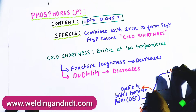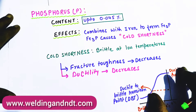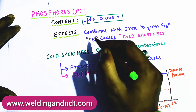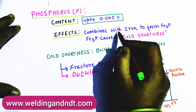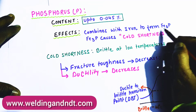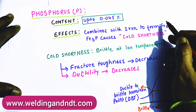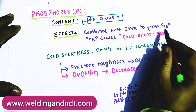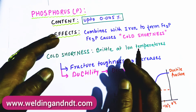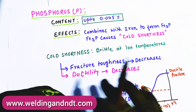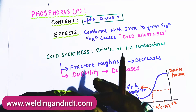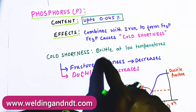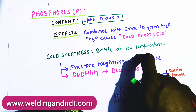After manganese we will read about phosphorus. Phosphorus is present up to 0.04–0.05 percent, and phosphorus combines with iron and forms Fe3P. Fe3P is dangerous because it causes cold shortness. Cold shortness is just opposite to hot shortness — in hot shortness the material becomes brittle at higher temperatures, whereas in cold shortness the material becomes brittle at low temperatures.